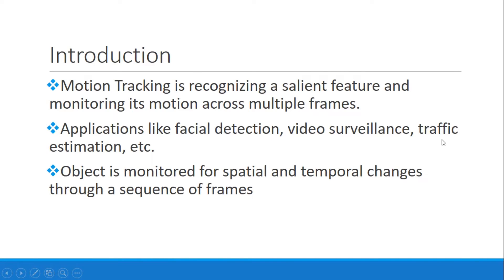So what is motion tracking? Motion tracking involves recognizing a feature of interest and tracking it through a sequence of frames. A salient feature refers to any feature that is of interest to us in an image. There are various important applications like facial detection, surveillance purposes, and traffic estimation to figure out where there's excessive traffic.